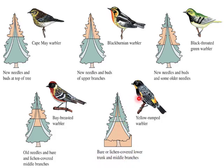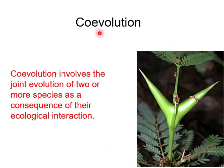Competing species can divide resources in many ways. Partitioning, however, cannot occur indefinitely because the total quantity of any resource is limited. If individuals in a population cannot obtain enough of a resource to support reproduction, then similarities between species become important limiting factors and the competitive exclusion principle occurs. Now, co-evolution. Co-evolution involves the joint evolution of two or more species as a consequence of their ecological interaction.